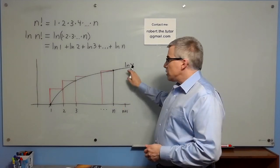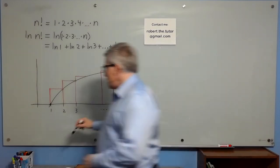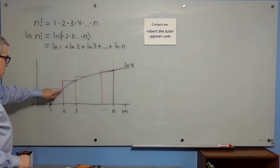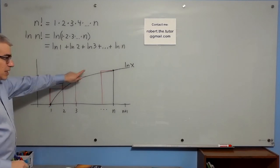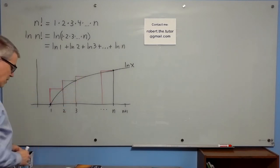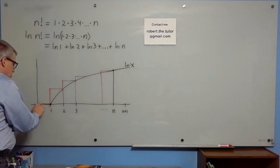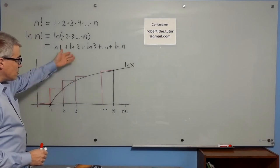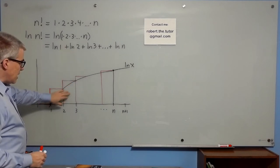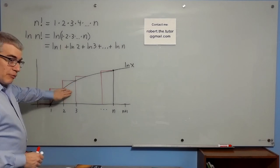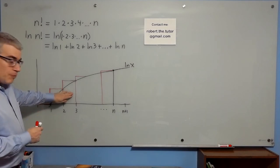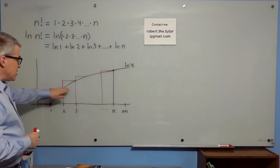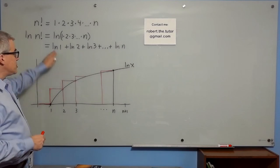Now if we take a graph of natural log x, the heights here are natural log 1, natural log 2, natural log 3, etc. And if we make rectangles of width 1 and height natural log whatever, then we will get a box with area equal to natural log of whatever. So these areas will add up to this sum.